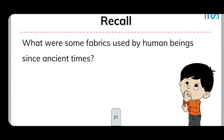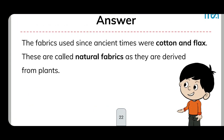Recall: what were some fabrics used by human beings since ancient times? The fabrics used since ancient times were cotton and flax. These are called natural fabrics as they are derived from plants.